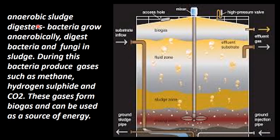In the anaerobic sludge digester container, the gas can be used as a fuel. Then there is the sludge zone, then the fluid zone, then the gas zone — the biogas we will use. In the fluid zone, there is another effluent which is to be further treated.